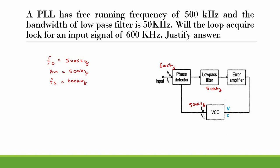The phase detector will produce both a sum frequency component and a difference frequency component of the two input signals. We have 600 kilohertz as one input and 500 kilohertz as the other. So the outputs of the phase detector are: a sum component of 500k plus 600k, which equals 1100 kilohertz, and a difference component of 600k minus 500k, which equals 100 kilohertz.